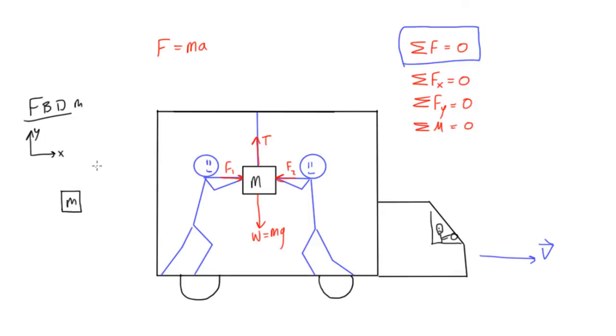Now all we do is we draw the four forces that are acting on it. Or there could be more, but in this case there's only four. So you would draw, we have W going down, tension in the rope going up.